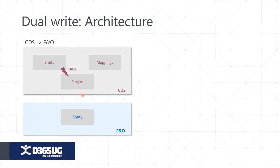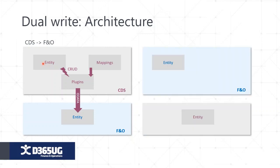In the CDS environment, a few plugins have been written by the dual-write team. Any CRUD operation that happens triggers these plugins. The plugins read data from the entity using mappings — whatever mappings you define between both environments, the plugins read data based on those mappings and send it across to Finance and Operations. This is why all data movement is based on entities. Similarly, we have a concept of the data management module in the FNO environment.